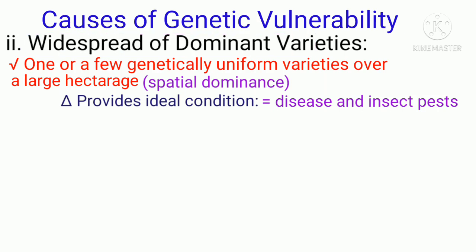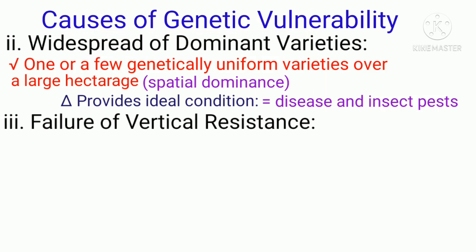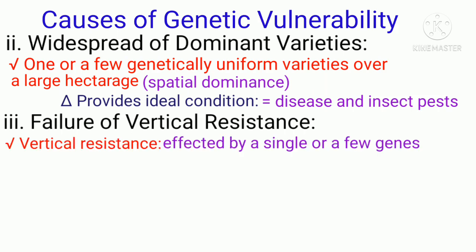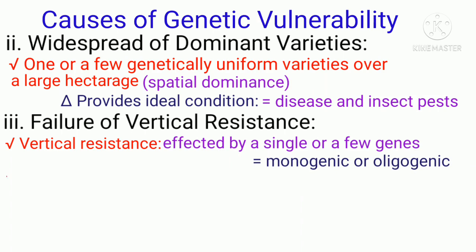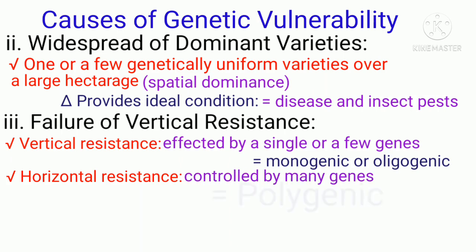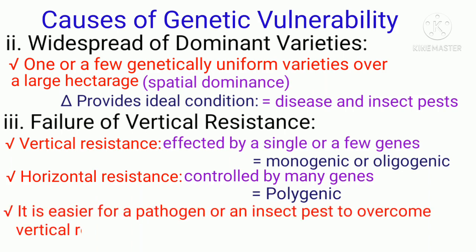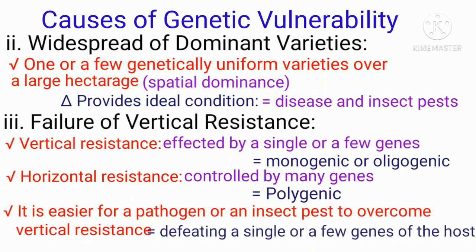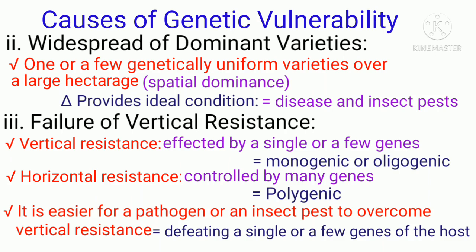The other cause of vulnerability is the failure of vertical resistance. Vertical resistance is believed to be affected by single or a few genes — known as monogenic or oligogenic — as opposed to horizontal resistance, which is controlled by many genes and is called polygenic. Vertical resistance is highly specific and liable to change with the evolution of pathogens. It is easier for a pathogen or insect pest to overcome vertical resistance, as it only requires defeating a single or a few host genes through the generation of corresponding virulent genes via mutation.